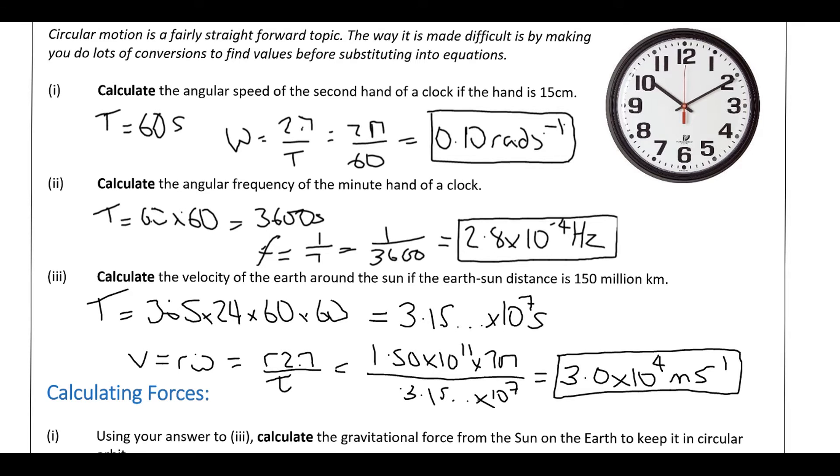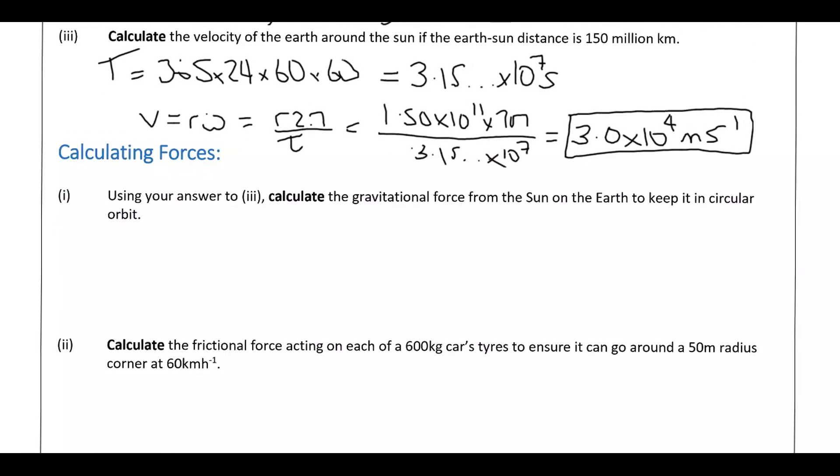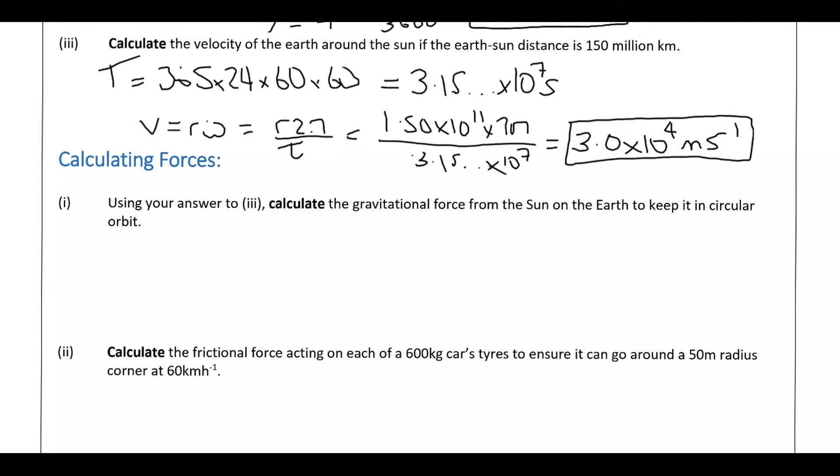Alright, so let's move on to the next question. So we're going to use the velocity we've got here to calculate what the gravitational force is if it's in circular motion. So what you should know or be able to look up on your formula sheet is the force from circular motion is mv squared over r.